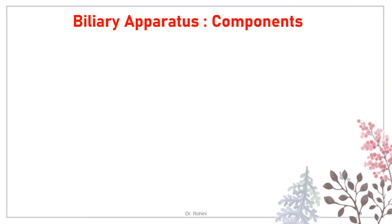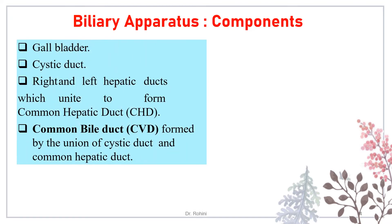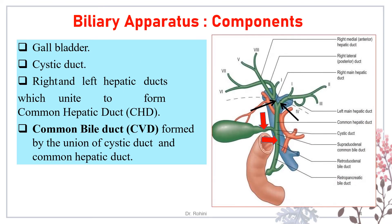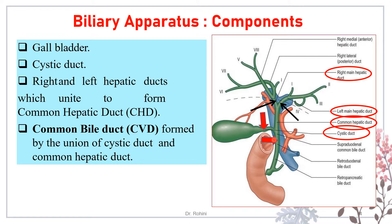The biliary apparatus components include the gallbladder, cystic duct, right and left hepatic ducts — which join together to form the common hepatic duct. The common hepatic duct is then joined by the cystic duct from its right side, forming the common bile duct. These are all the components of the extrahepatic biliary apparatus.